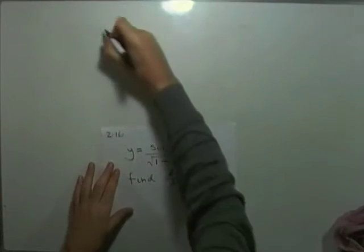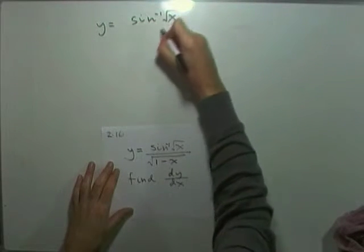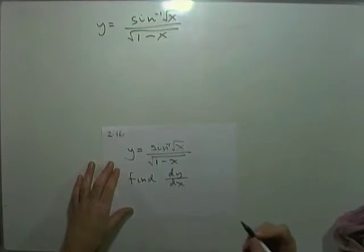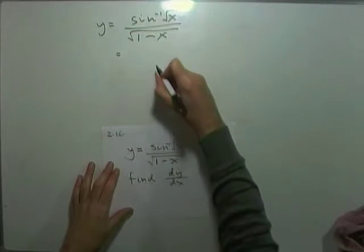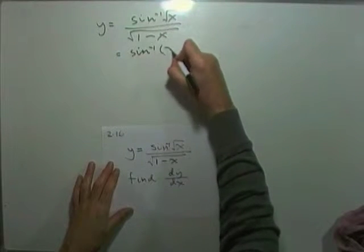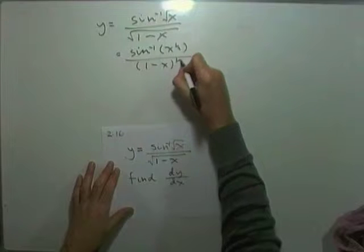So this one would simply be this. We've got y equals inverse sine of root x over the square root of 1 minus x. First stage, as usual, put that into index form. So that's inverse sine of x to the half over 1 minus x to the half.